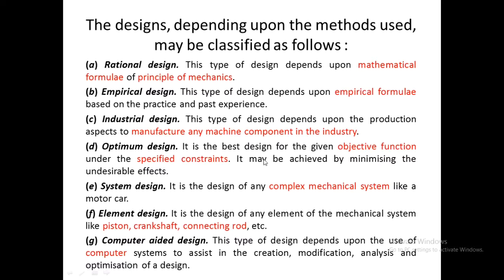Rational design is based on existing mathematical formulas or principles. Empirical design is based on empirical formulas already developed by someone else in the past. Industrial design is the manufacturing of machine components based on specifications provided in the industry.